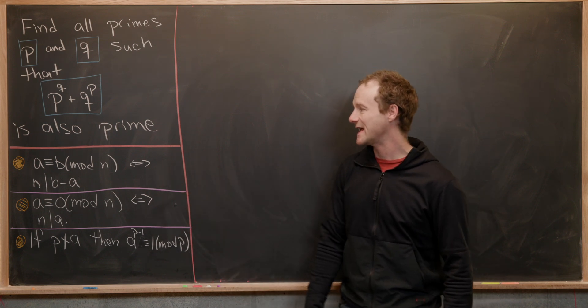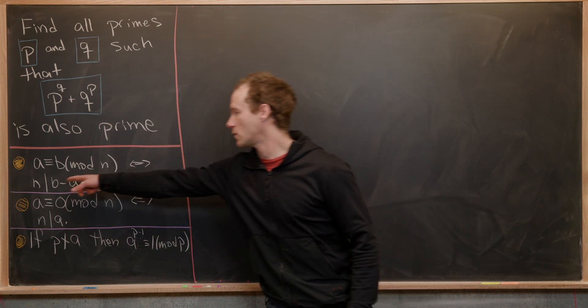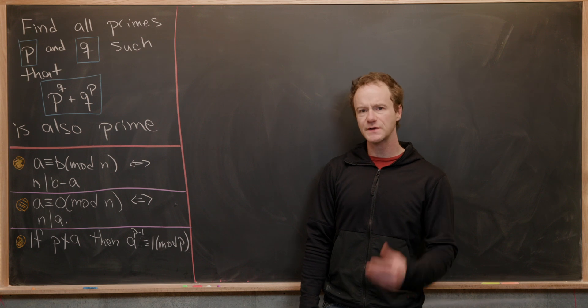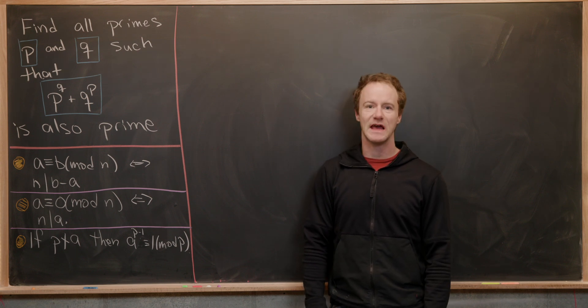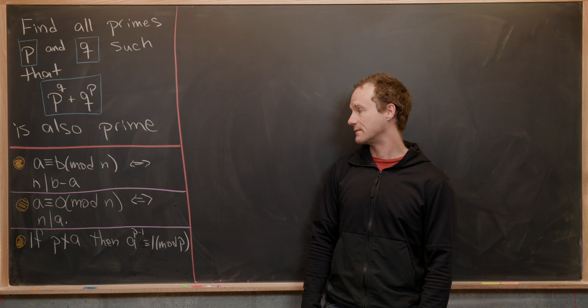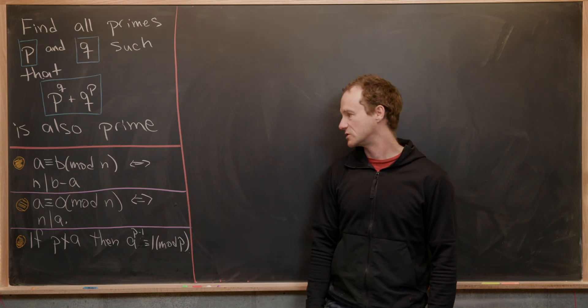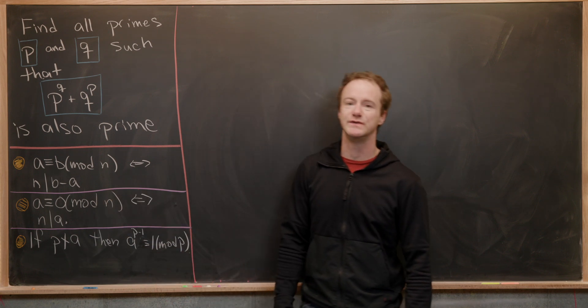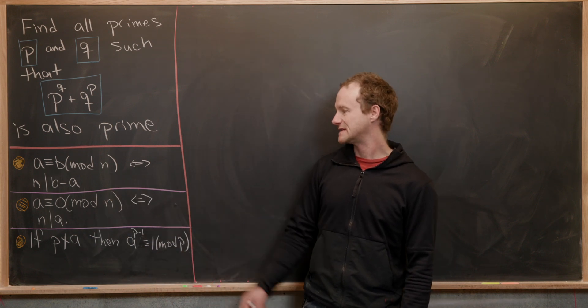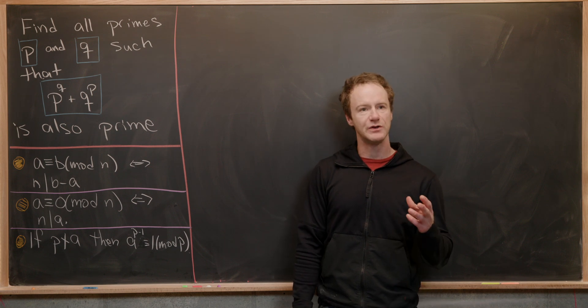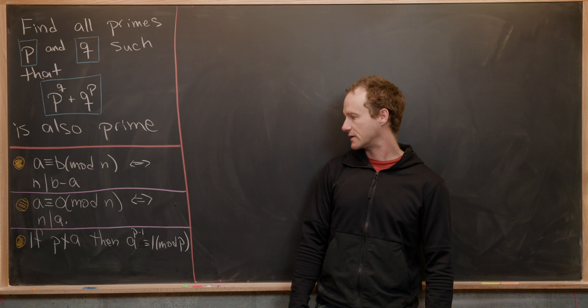We say that a is congruent to b modulo n if and only if n divides b minus a. You can also think about this as a and b having the same remainder when dividing by n. We're going to use a very special case of that, which is when a is congruent to zero mod n. That means that n divides a or a is a multiple of n, so when you divide a by n, you get zero as the remainder.